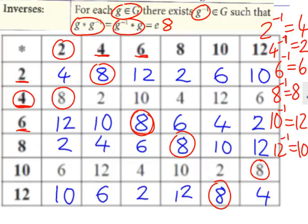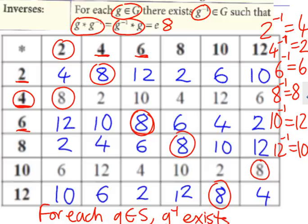Okay. So, you can say, for each G in the set, G dashed exists in S as shown here. You've identified the inverse of each and every element.